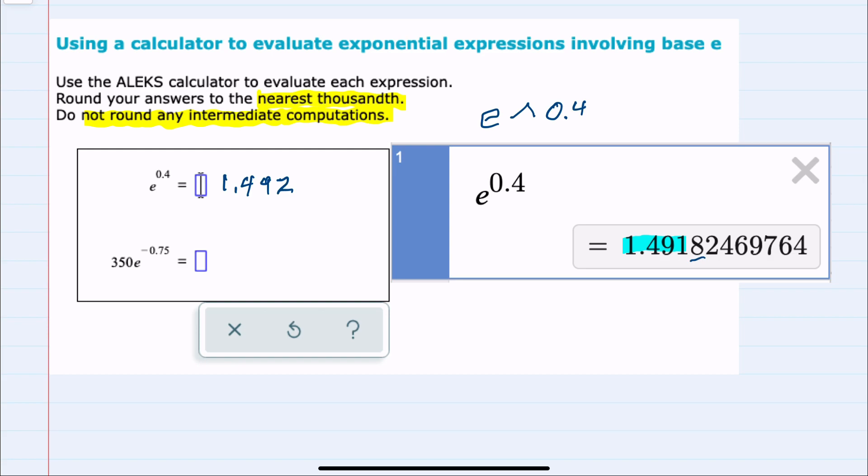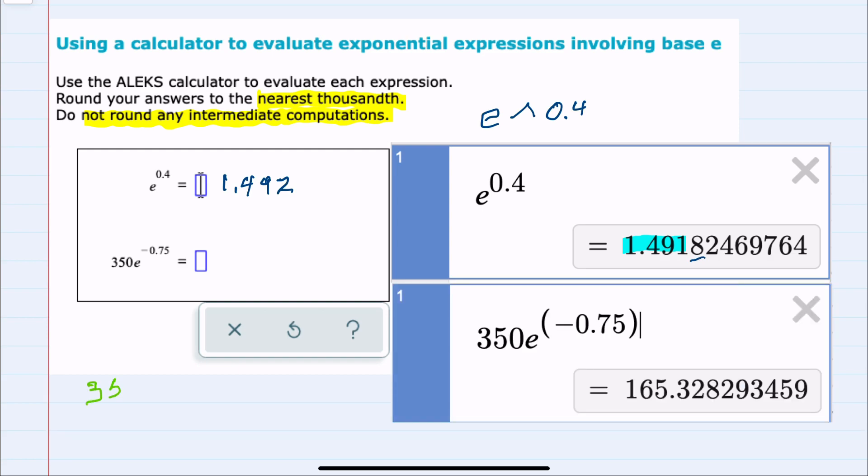For the second expression, I input 350. You can either use the multiplication sign or just put an e, and Desmos will know that means multiplication, then the caret symbol.